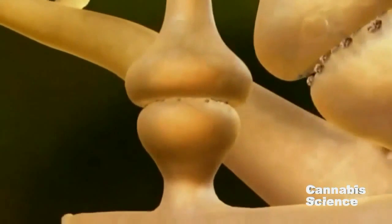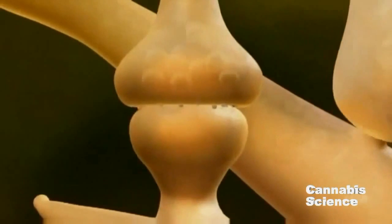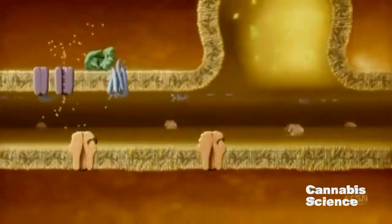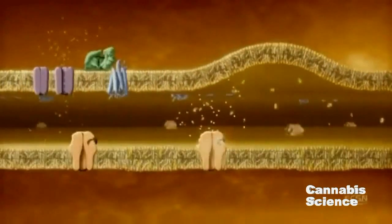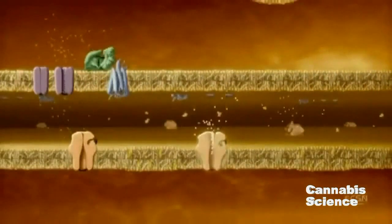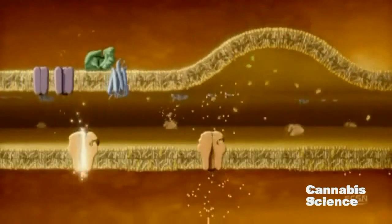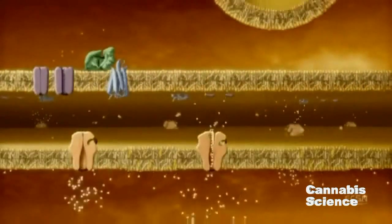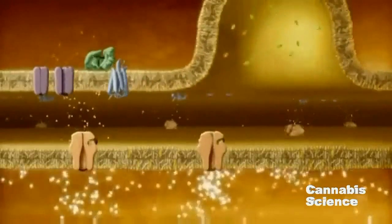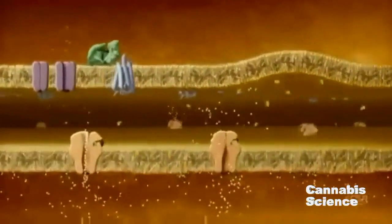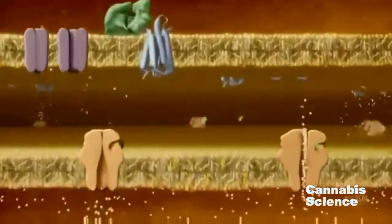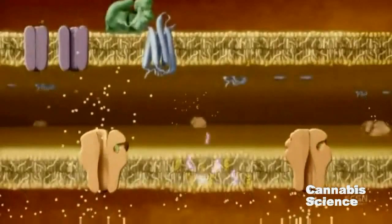Let's take a closer look at this mechanism using a glutamatergic neuron model. When an action potential reaches the axon terminal, membrane depolarization triggers the release of glutamate. Glutamate binds to post-synaptic glutamate receptors, inducing calcium channels to open. During periods of intense neural activity, calcium accumulates in the post-synaptic neuron.